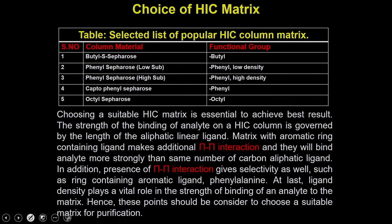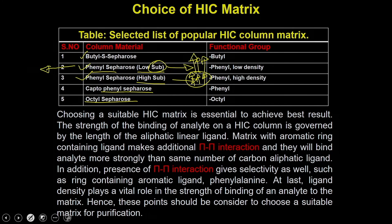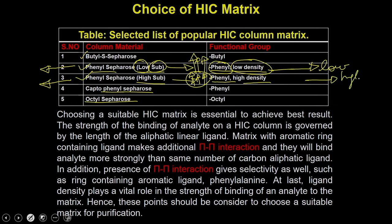There are different types of matrices: you have butyl-Sepharose, phenyl-Sepharose low substituted, phenyl-Sepharose high substituted, and octyl-Sepharose. What is meant by low substituted or high substituted is the amount of phenyl groups attached to the Sepharose beads. High substitution means more phenyl groups attached, so the affinity for the high-substituted matrix is greater compared to the low-substituted. The functional group is phenyl; low density gives lower affinity, and high density gives higher affinity. Choosing a suitable HIC matrix is essential to achieve the best results.